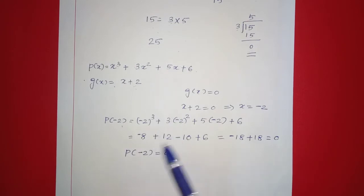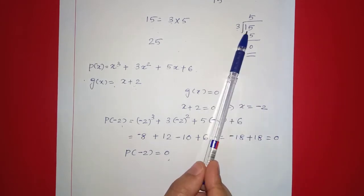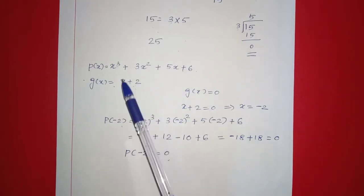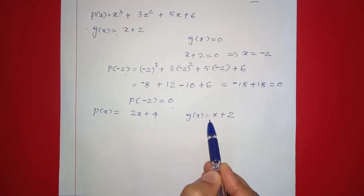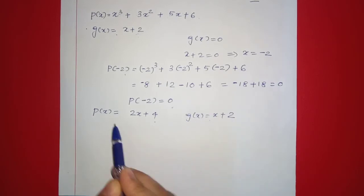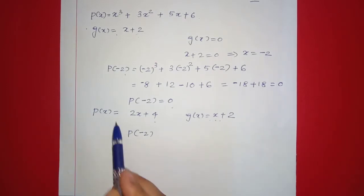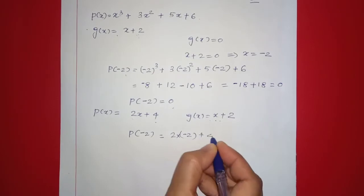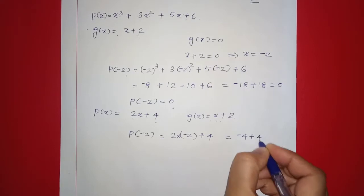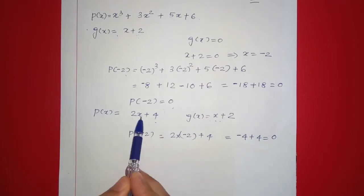That is equal to 0. Now we have P of negative 2 equal to 0. That is why the remainder is 0. Since the remainder is 0, the dividend is factored. So P(x) has G(x) as a factor. In this example, P(x) is equal to 2x plus 4 and G(x) is equal to x plus 2. We verify: P(negative 2) equals 2 times negative 2 plus 4, which equals negative 4 plus 4, equals 0.